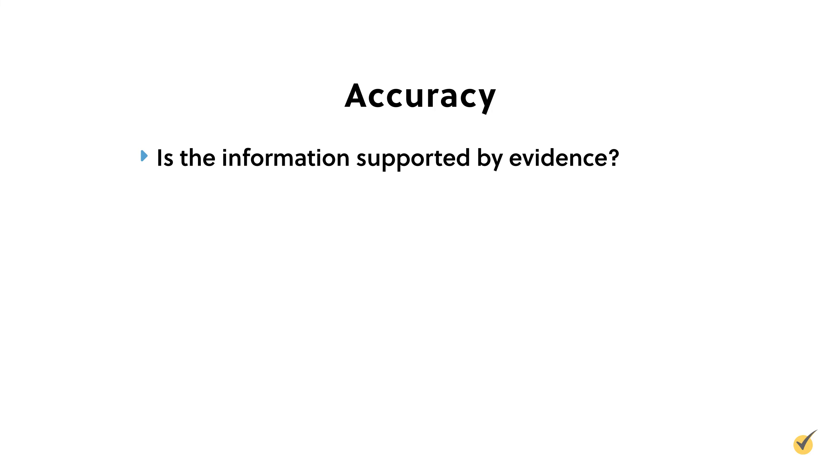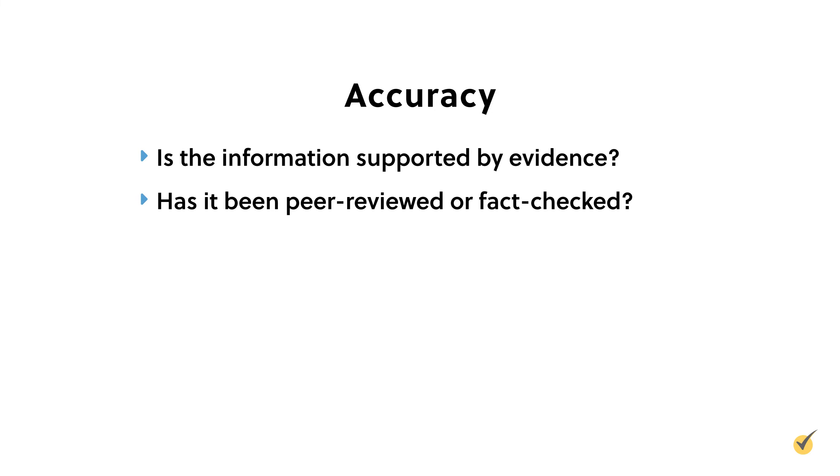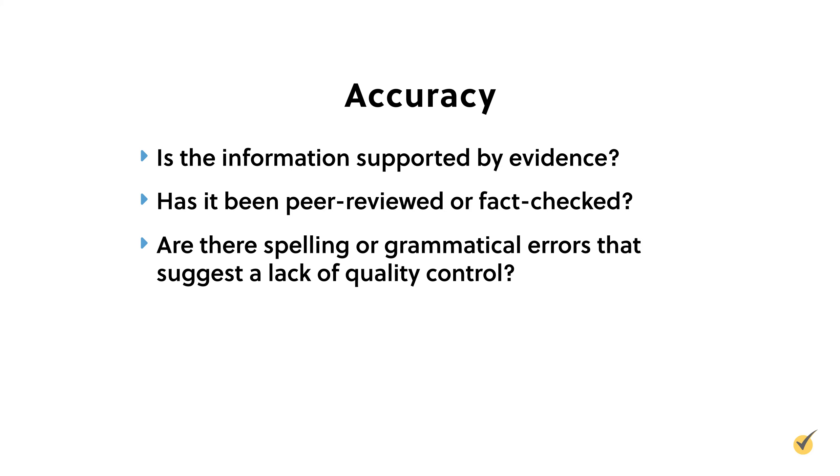The second A is accuracy. Accuracy involves the reliability and correctness of the information. An accurate source is free from errors, both factual and conceptual. If you're trying to cite a source about Abraham Lincoln, but it's full of grammatical errors and claims he hunted vampires, then you should look for a better source. Questions to ask about accuracy include: Is the information supported by evidence? Has it been peer-reviewed or fact-checked? And are there spelling or grammatical errors that suggest a lack of quality control?